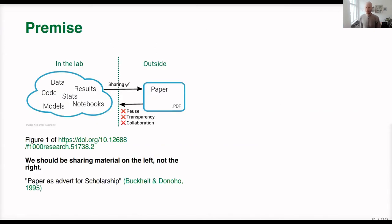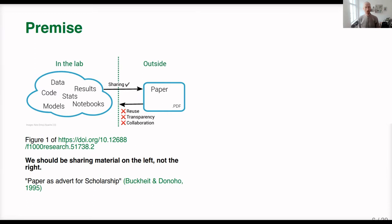A bit more detail on the situation. In the majority of cases, researchers do not share everything they use in their day-to-day research work. They have data, intermediate results, computational notebooks, different kinds of models — all kept in the lab or on their computer. But when it comes to sharing, in most cases we still resort to a paper that we publish, often in PDF format. There's a disconnect because based on the paper, we cannot do things we'd like to do with code and data: we cannot reuse them, we have very limited transparency, and this is a barrier to collaboration. This all means that research today based on code and data is often ineffective and not very transparent.